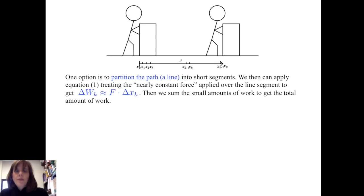One option is to partition the path, which is a line, into short segments. We then apply equation one, which is the constant force equation, treating the nearly constant force applied over the line segment to get the change in the amount of work done.